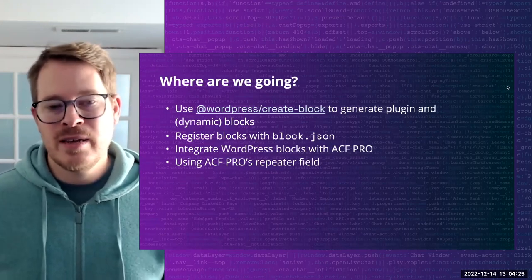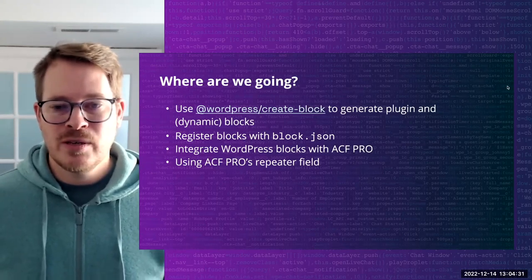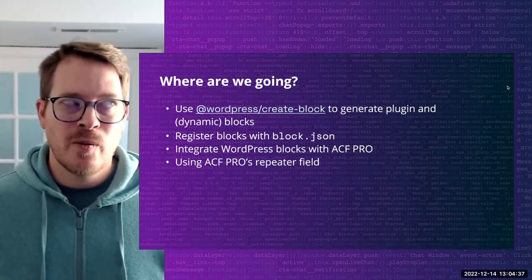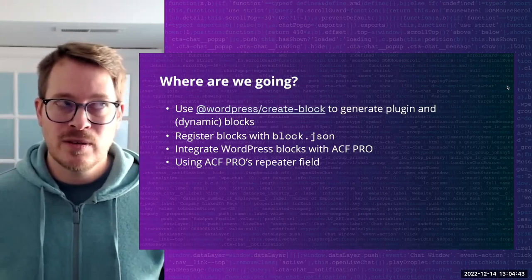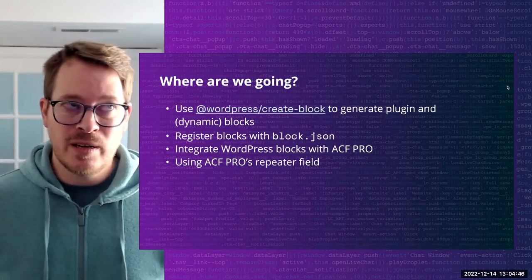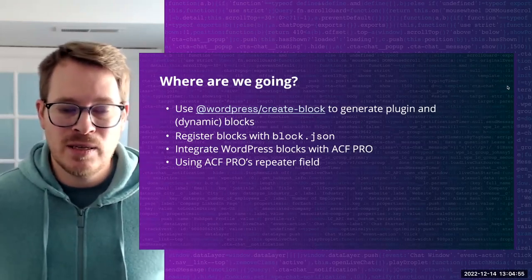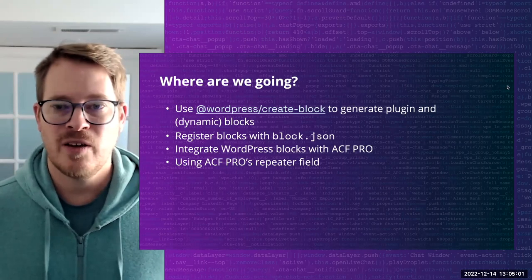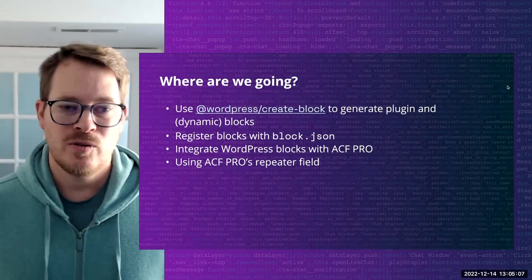What we're going to cover today is using the WordPress create block package to generate a plugin and a dynamic block. We're going to show how to interact and use the block.json, which registers the metadata for any block within WordPress. And then we're going to show how to integrate ACF Pro blocks into WordPress blocks. We'll also register ACF Pro fields using the repeater field, which is a Pro field, to build out an accordion.